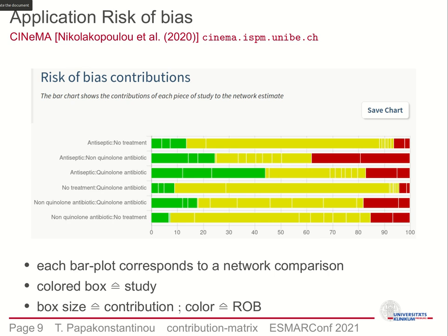Wanting to give a real-life use of the contribution matrix, I present the judgment of the influence of study risk of bias as performed in CINeMA, the web application we developed for judging the results of network meta-analysis. In this example you can see a series of bar charts, each one referring to a network effect and each block within to a single study. Blocks have size proportional to the study's contribution and color according to the study's risk of bias. Although for each comparison the exact same studies are included, the distribution of risk of bias differs substantially.